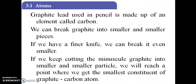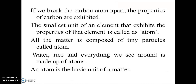First, atoms. Graphite is used in pencils, which are black in color. It is made up of an element called carbon. If you talk about the carbon atom, it is used in graphite. The smallest unit of an element that exhibits the properties of an element is called an atom.